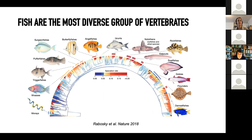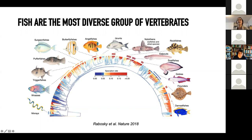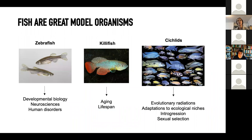We have quite a lot of fish fans in the assembly today. We're going to talk about fish and their whole genome duplications. We're interested in fish first because they are one of the most diverse groups of vertebrates in terms of number of species — in fact, the most diverse group of vertebrates. There's extreme diversity in fish in terms of body sizes, coloration, and body organization.